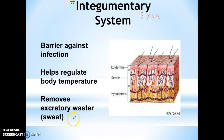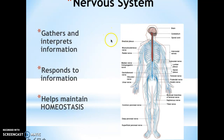The next body system is the nervous system, and this is kind of like the control center of your body. This is where all of the information is gathered and interpreted to be able to send signals throughout the body. It responds to information and it helps maintain homeostasis. This is a system that works very closely together with all the other systems — the nervous system works with the muscular system to provide movement, and with the endocrine system so that it tells the body what hormones are needed and which hormones need to be produced. The nervous system is working together with all the other systems very closely.